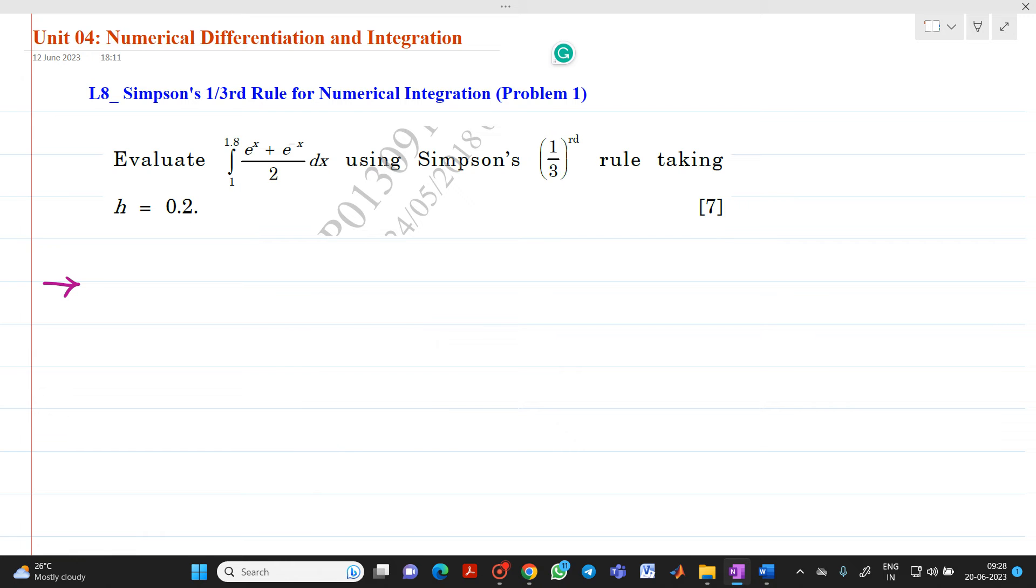The question is, evaluate integration 1 to 1.8 e raised to x plus e raised to minus x divided by 2 dx using Simpson's one-third rule with h equal to, that is, step size equal to 0.2.